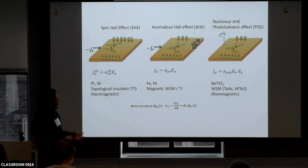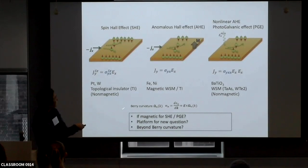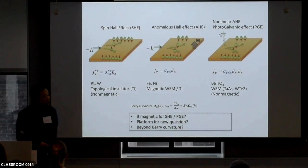Here I try to ask: if the system has magnetism, especially for the spin Hall or this non-linear response, there might be something different. Now we have a larger material space — especially magnetic ones, like Weyl semimetals. If we have a magnetic Weyl semimetal, we can possibly have a strong, enormous Hall effect. But can we do something more? Can it be a platform for us to ask new questions?